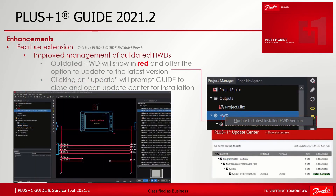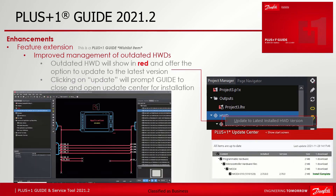After these small changes, let's take a look at a feature extension called improved management of outdated HWDs, which consists of three main parts. If an outdated HWD is used in the project, the node is shown red in the project manager. If you move over it, it says 'The HWD used for this project is outdated — right click for options.' Option one: update to latest installed HWD version. This option will be visible if a newer HWD version has been installed in GUIDE already.